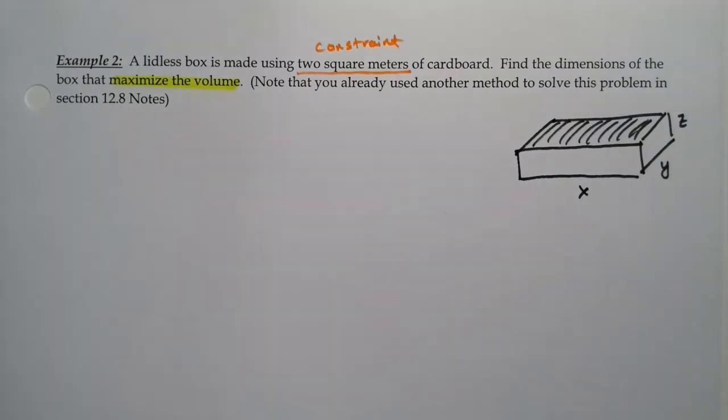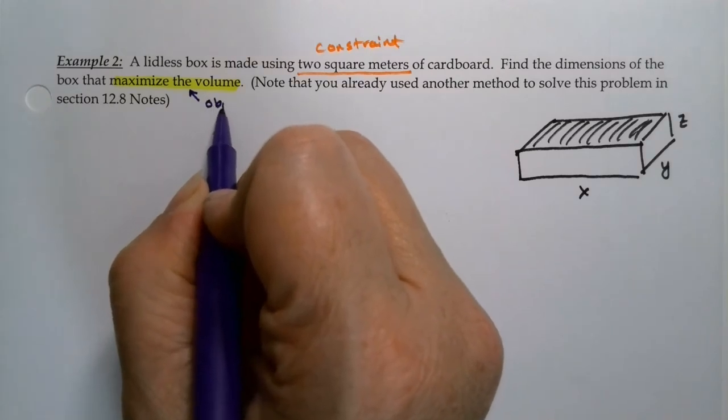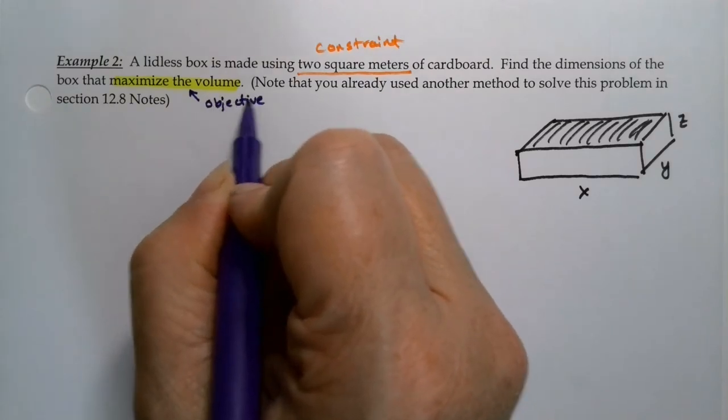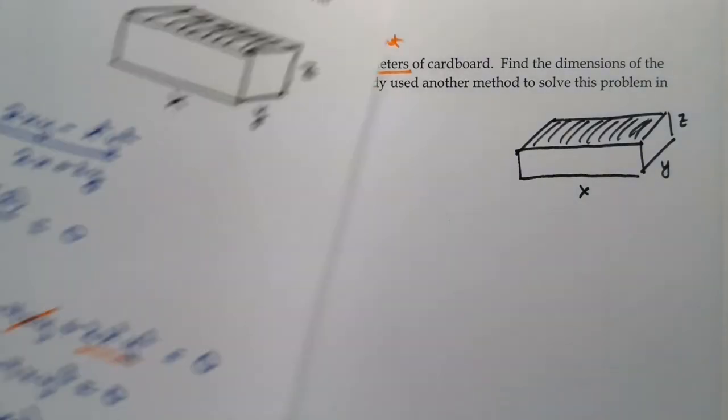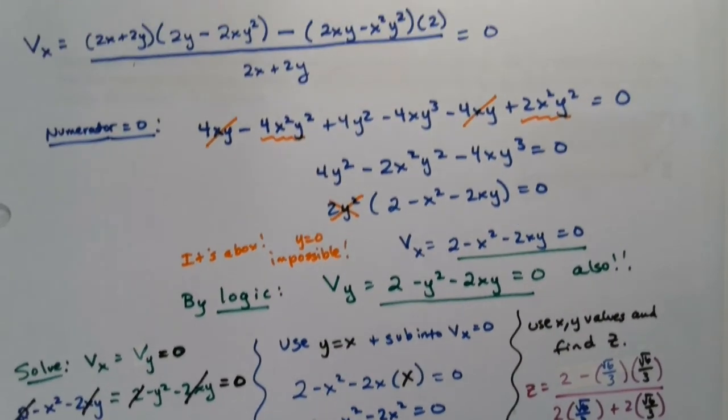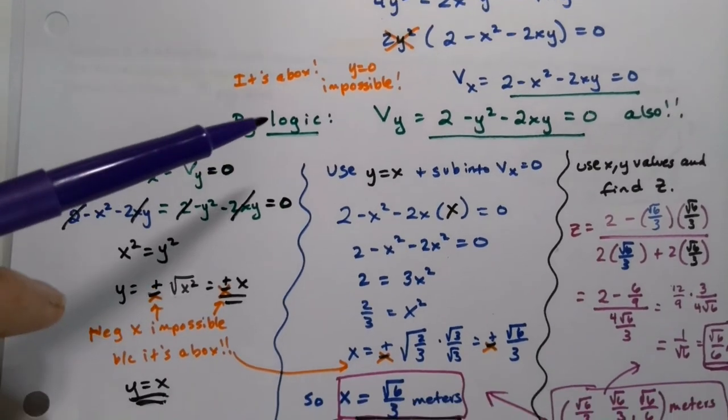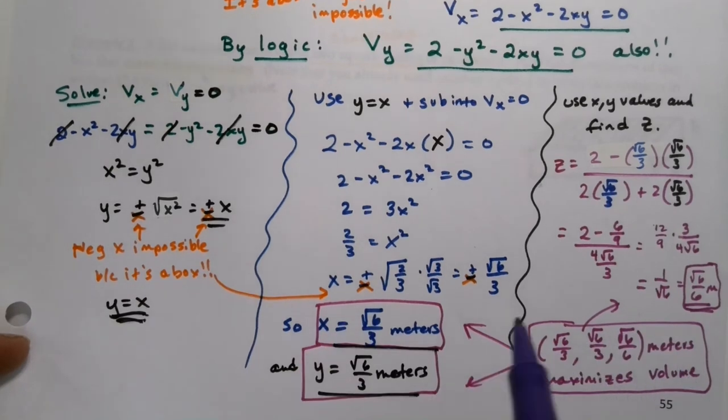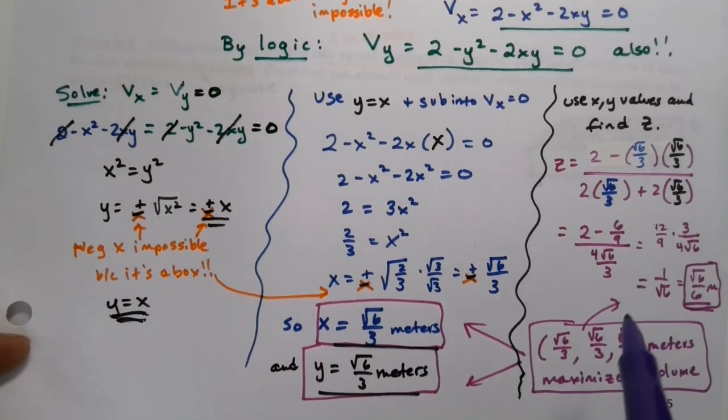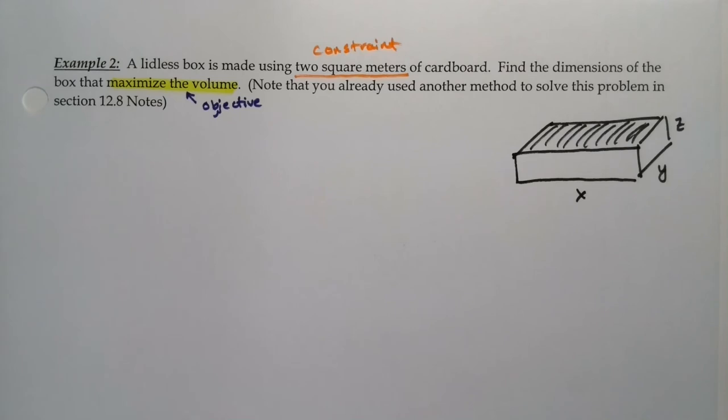Now we've already done this section, this particular problem. We did this problem back before in section 12.8 and if you remember it was kind of a pain. We had v sub x and v sub y and did all this math to come up with the numbers square root of 6 over 3, square root of 6 over 3, and square root of 6 over 6. So let's see if the Lagrange multiplier method makes a little bit more sense or is easier to work with.